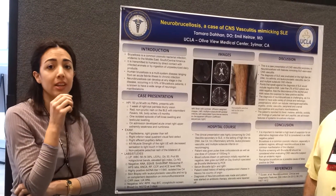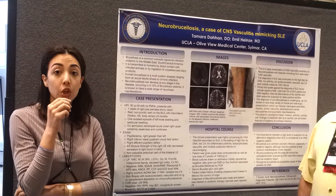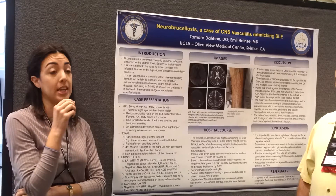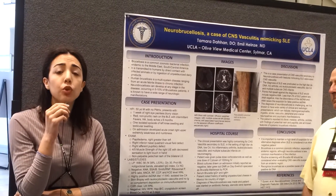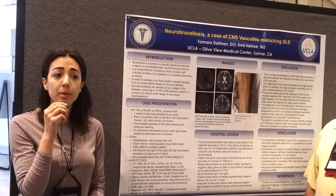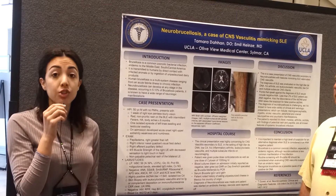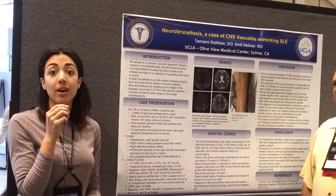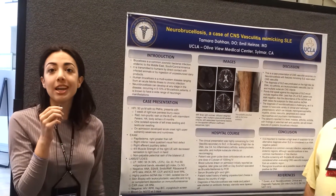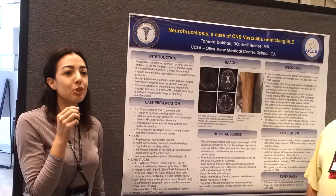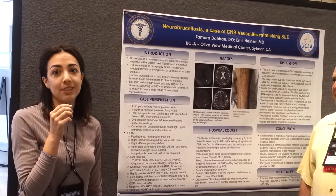One thing that we postulated in this poster is that if you have brucellosis, that may be a potential cause for a falsely positive dsDNA titer. Anytime you're evaluating someone for CNS vasculitis, you really have to look for infections as possible mimickers. Especially if someone is coming from an endemic area, you should screen them with Brucella serum antibodies. When we went back and talked to him, he told us that he was eating unpasteurized cheese from his home country in Mexico — so that really clinched the diagnosis for us. Very important to keep in mind when evaluating CNS vasculitis.